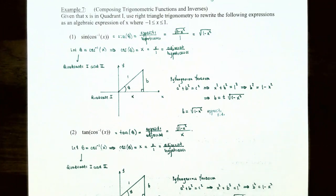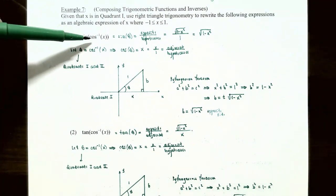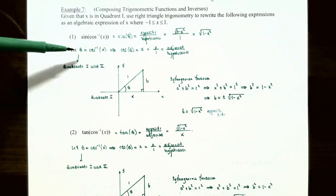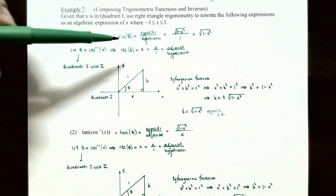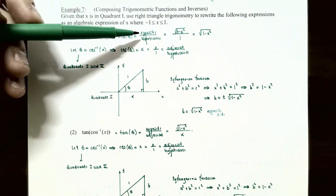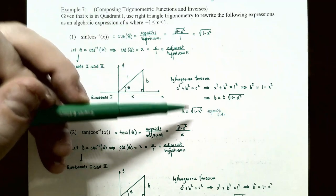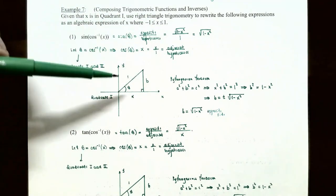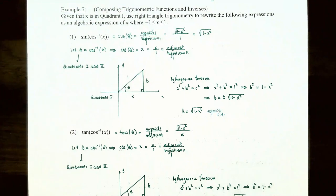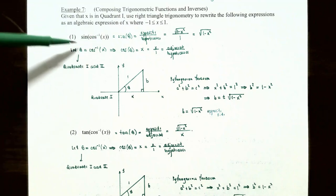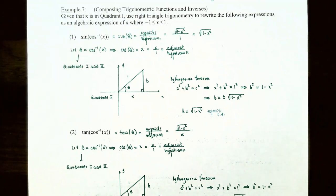Going back to the original problem, sine of inverse cosine of X equals sine of theta, which is opposite over hypotenuse: square root of one minus X squared divided by one, which simplifies to square root of one minus X squared. This is the algebraic expression representing the composite of a trig function and its inverse trig function.